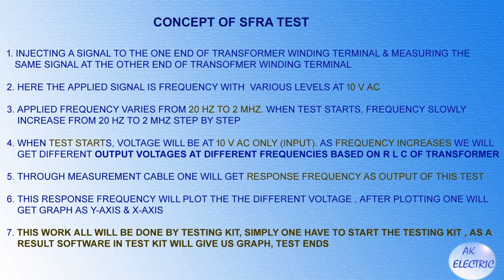In the SFRA concept, a signal is injected to one end of the transformer winding terminal and measured at the other end. The applied signal is 10 volt AC with frequency varying from 20 Hz to 2 MHz. When the test starts, frequency slowly increases step by step. As frequency increases, different output voltages are obtained at different frequencies based on the RLC of the transformer. Through the measurement cable, the response frequency is captured and plotted as a graph with Y-axis and X-axis.